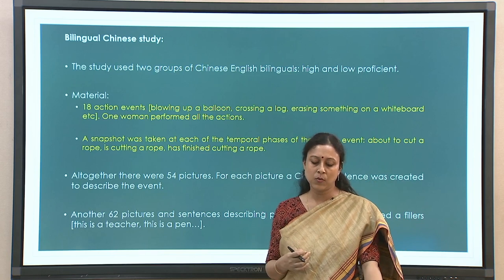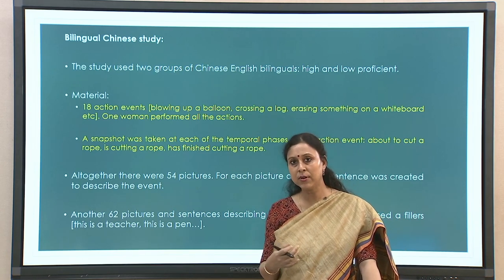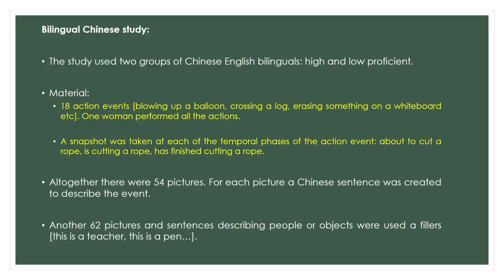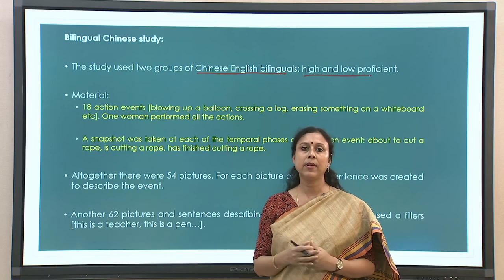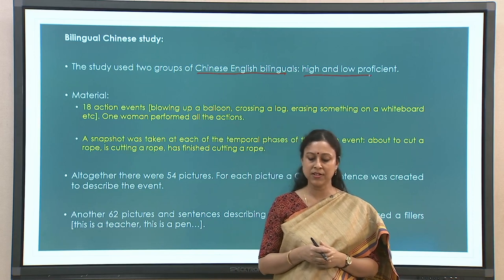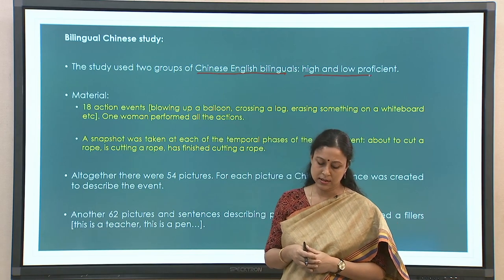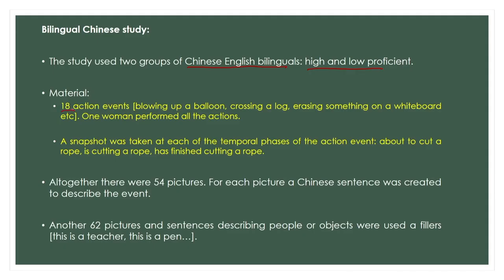This background worked as a starting point for Chinese-English bilingual studies. The Li Wenlon study used similar techniques with Chinese-English bilinguals, but with an interesting modification: the manipulation was proficiency level. Participants had Chinese as L1 and English as L2, but their L2 proficiency differed — some were low proficient and some were high proficient. The study used 18 action events — blowing up a balloon, crossing a log, erasing something, writing, various activities — depicted in cards.